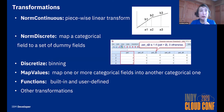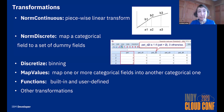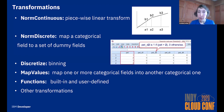In terms of transformations, NormContinuous is a piecewise linear transformation often used when you normalize data before feeding it into a neural network or regression model. NormDiscrete describes one-hot encoding. Discretize converts a continuous predictor into a categorical one. MapValues maps categorical fields to new ones. With Functions, there is a pretty rich set of built-in functions, and users can build their own functions out of the existing transformations.